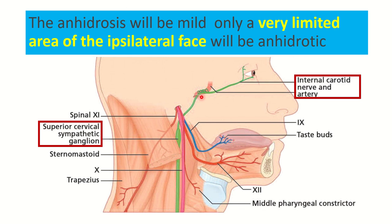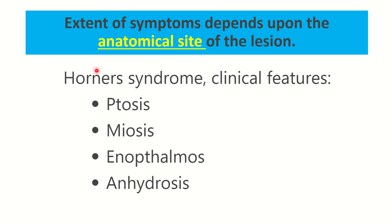Following injury to the sympathetic plexus around the internal carotid artery, anhydrosis will be mild — only a very limited area of the ipsilateral face will be anhydrotic. The classic features of Horner's syndrome are: ptosis, miosis, enophthalmos, and anhydrosis. The extent of these symptoms depends upon the anatomical site of the lesion — this point is important.